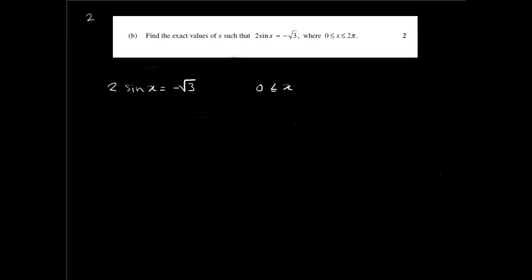Moving on to question 2B, we are asked to find the exact value of x such that 2 sine x equals negative root 3, where x has the limits greater than or equal to 0 but less than or equal to 2 pi. Using algebra, we bring the 2 to the other side to get sine x equals negative root 3 over 2.